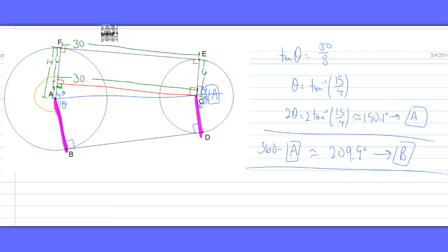We have the top tangent length, and that length is 30. So for our entire belt length, we have 30, plus 30 at the bottom as well.